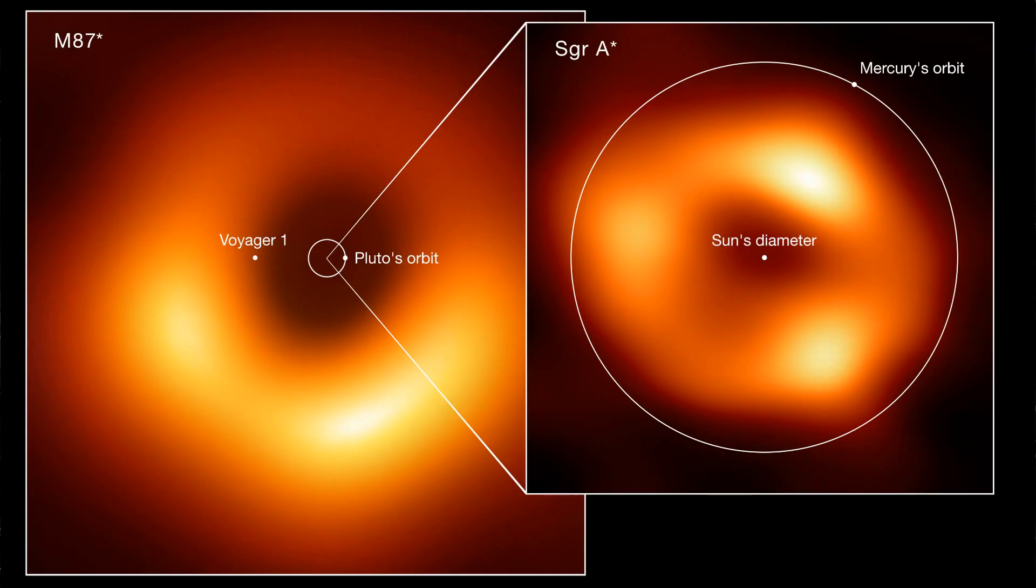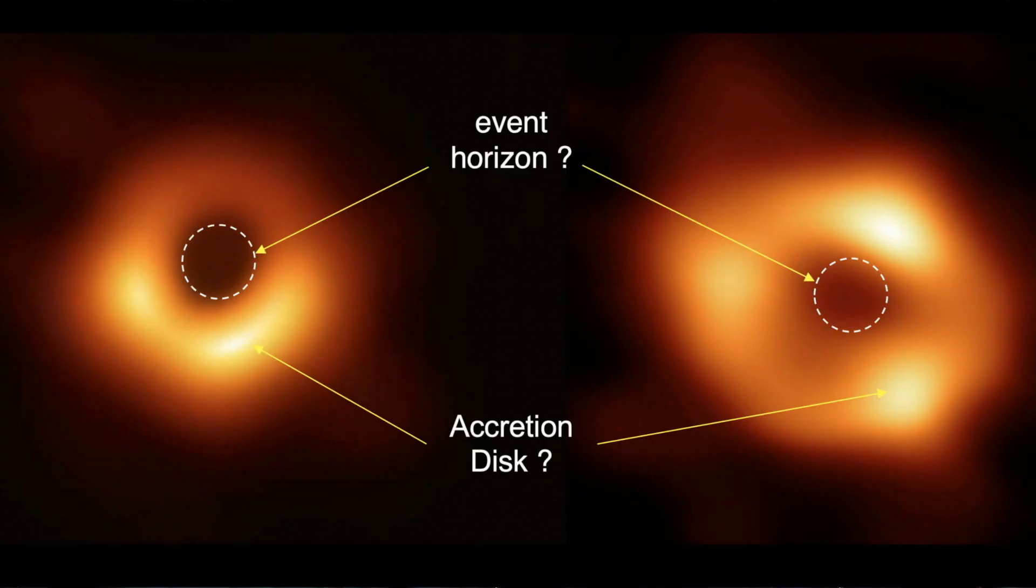We can't directly observe Sagittarius A star because it doesn't emit any light. However, astronomers can detect its presence by studying the behavior of objects around it. Stars near the galactic center exhibit highly elliptical orbits, moving at incredibly high speeds. These extreme motions suggest the presence of a massive invisible object at the center influencing their trajectories. Observations reveal a swirling disk of hot gas surrounding Sagittarius A star. This gas is constantly heated and accelerated as it falls towards the black hole, creating a signature glow detectable in radio waves and infrared light.